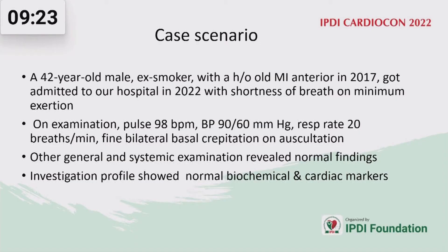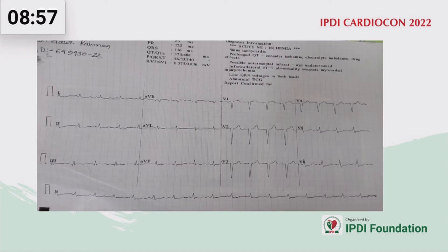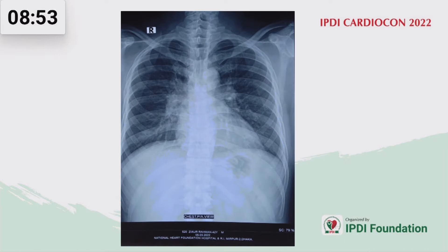The case: a 42-year-old male ex-smoker with a history of old AMI was admitted with shortness of breath. Pulse was 98 bpm, BP was low, respiratory rate was 20 breaths per minute, with fine bilateral basal crepitations on auscultation. Biochemical and cardiac markers were normal. ECG showed evidence of OMI anterior.